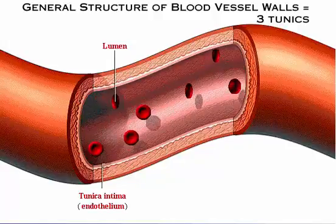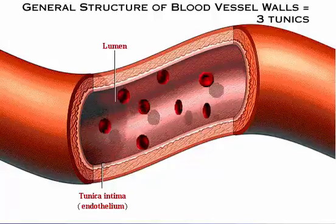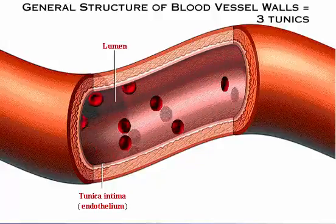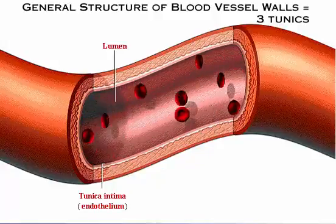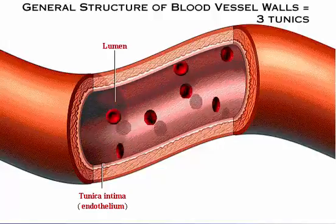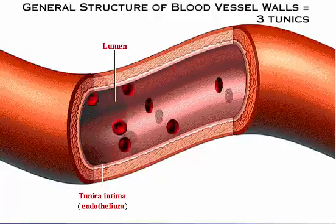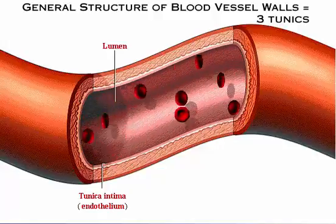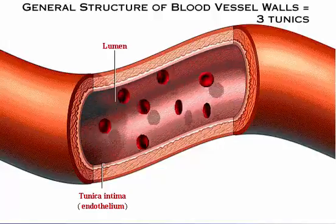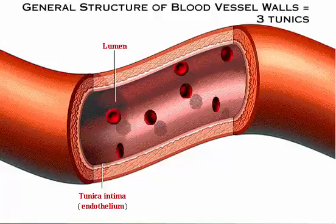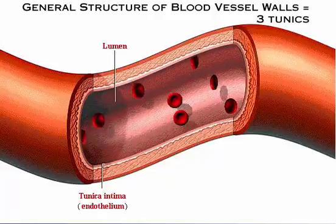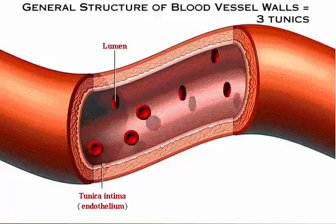The innermost tunic is the tunica intima, which is in intimate contact with the blood in the lumen. The tunica intima includes the endothelium that lines the lumen of all vessels, forming a smooth, friction-reducing lining.